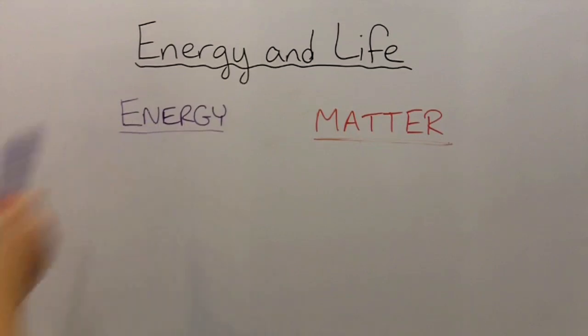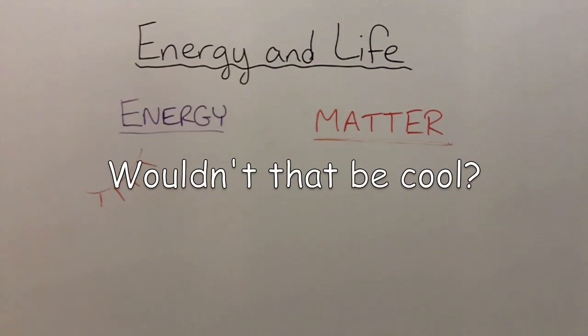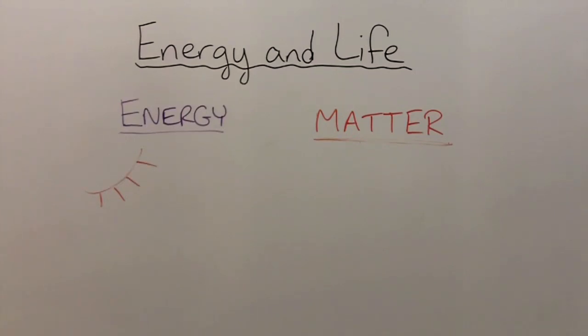So how do living things get energy? Most of the energy for life on this planet comes from the sun in the form of light energy. Now, of course, animals like you and I cannot use light energy directly. I can't get energy in my body just from standing in the sunlight. Fortunately, there are amazing organisms on Earth called producers.